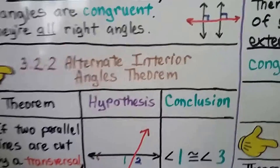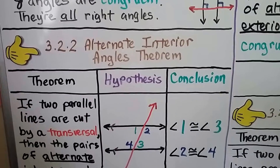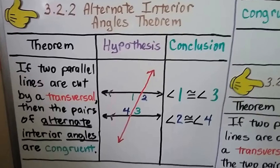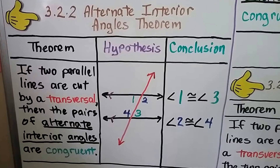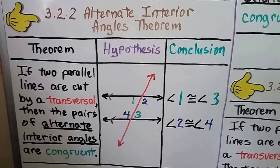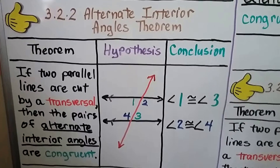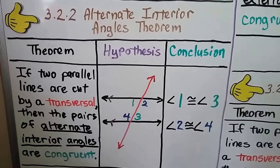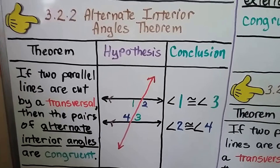I have another theorem for you. This is 3.2.2, the Alternate Interior Angles Theorem. The theorem says if two parallel lines are cut by a transversal, then the pairs of alternate interior angles are congruent. So you can see the green angles 1 and 3 are congruent, and the blue ones, 2 and 4, are congruent.